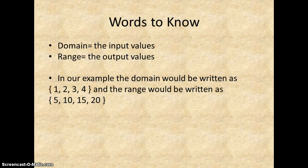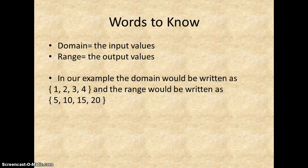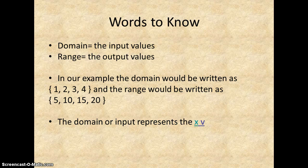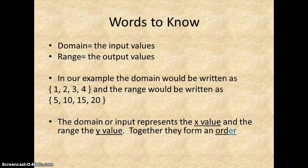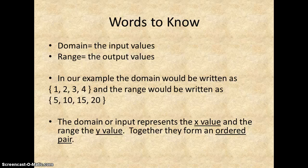Those are going to be valued as our x and y's. So our domain would be written as a set of numbers using the braces, and the range would also be written as a series or sequence of numbers. The domain or input represents the x value, the range is the y. What they do together is we put them together as an ordered pair, and this is where we start getting into our graphing stuff.